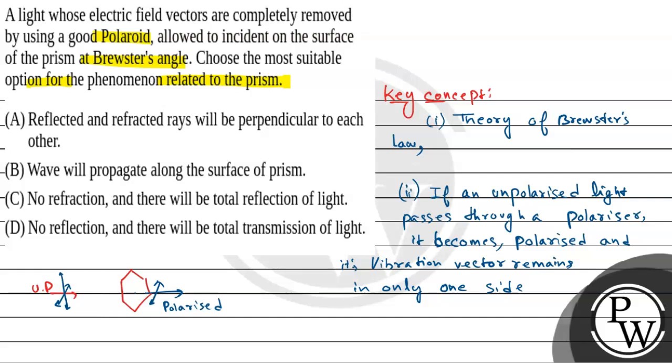Now, in the question, it's said that a light whose electric field vectors are completely removed by using polaroid. So, this means that only one side vibration vector will remain, and one side vibration vector will be removed when it passes through the polarizer. Now, it is allowed incident on the surface at the prism at Brewster's angle.